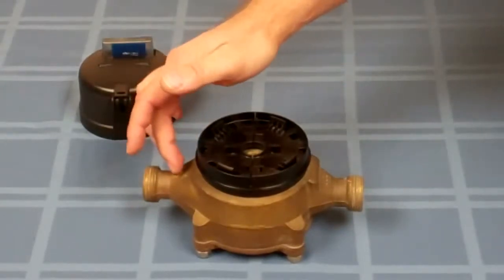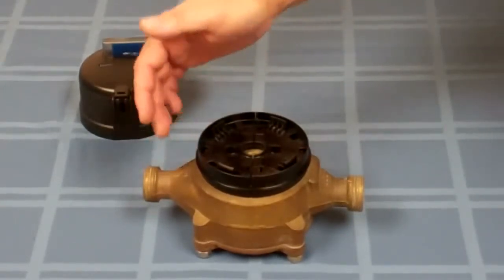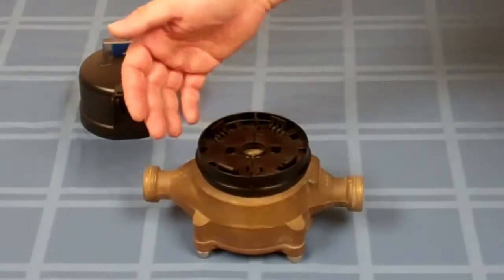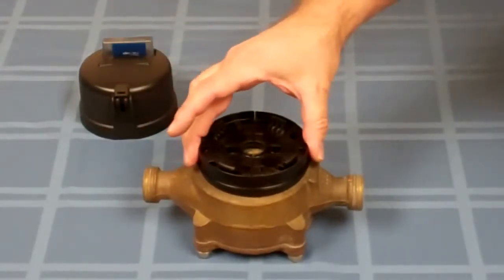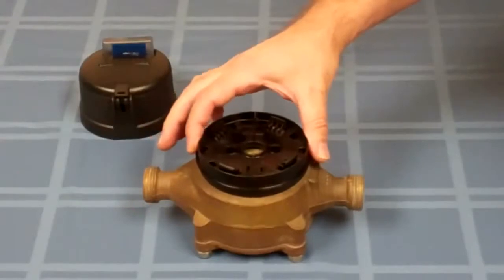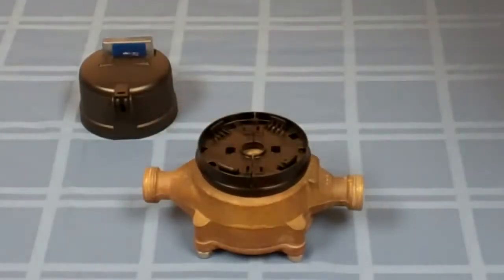Especially because brass varies from casting to casting, and as you do multiple installations, you're going to see that some of these snap rings are a little bit tighter than others. This one seems to have a little bit of play in there. Don't worry about that, that's normal.